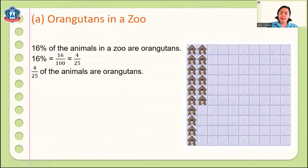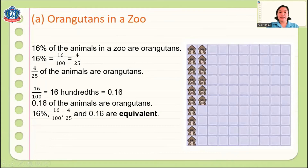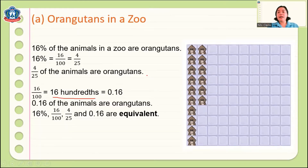Remember: when we see a percentage, it means out of 100. So 16% is 16 out of 100. We can reduce that to 4 out of 25. Then 16% is equal to 16/100, and if we change that into a decimal, it is 0.16. Changing a fraction to a decimal is easier when the denominator is already 100, since there are two decimal places, giving us 0.16.